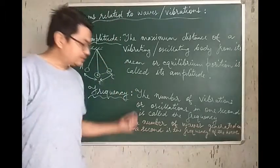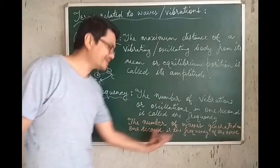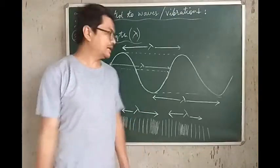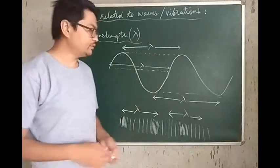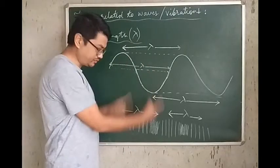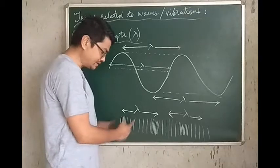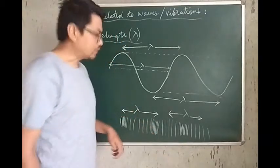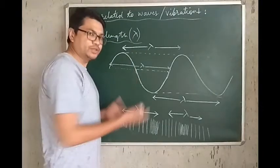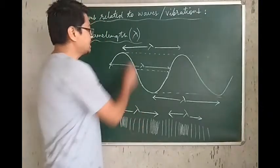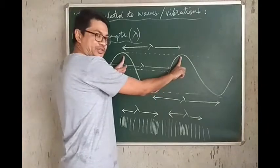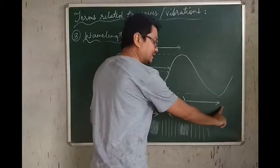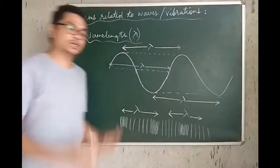The number of waves generated in one second is the frequency of the wave. Talking about wavelength: for any wave — be it a transverse wave or a longitudinal wave where you have series of compressions and expansions — the distance between two consecutive maxima is what is called wavelength, or equivalently the distance between two consecutive minima.